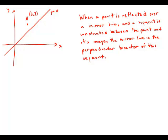We're going to start this question with an important geometry idea stated here. When a point is reflected over a mirror line and a segment is constructed between the point and its reflected image, the mirror line is the perpendicular bisector of this segment.